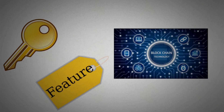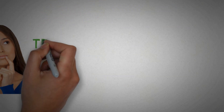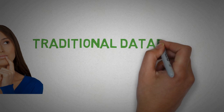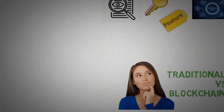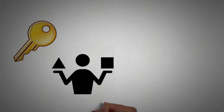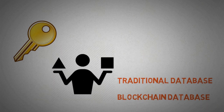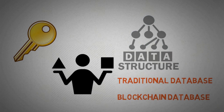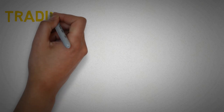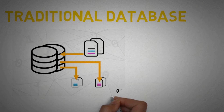You might be thinking: what is the difference between a traditional database and a blockchain database? One major key difference is how the data is structured inside these databases. In a traditional database, the data is stored in tables, whereas in blockchain it is stored inside blocks.